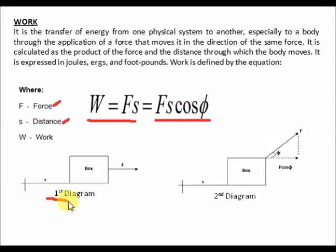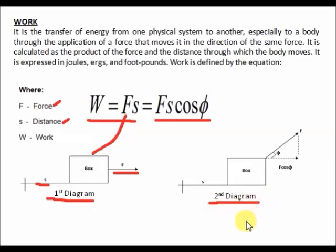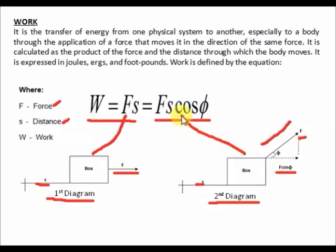Let us look at the first diagram. If the box was pulled by a force F which is horizontally straight and traveled a distance S, the formula for work is W equals F·S. Now let us look at the second diagram. If the box was pulled by an inclined force F and traveled a distance S, the force pulling the box is the horizontal component equal to F·cosine theta. So the formula for work is W equals F·S·cosine theta.